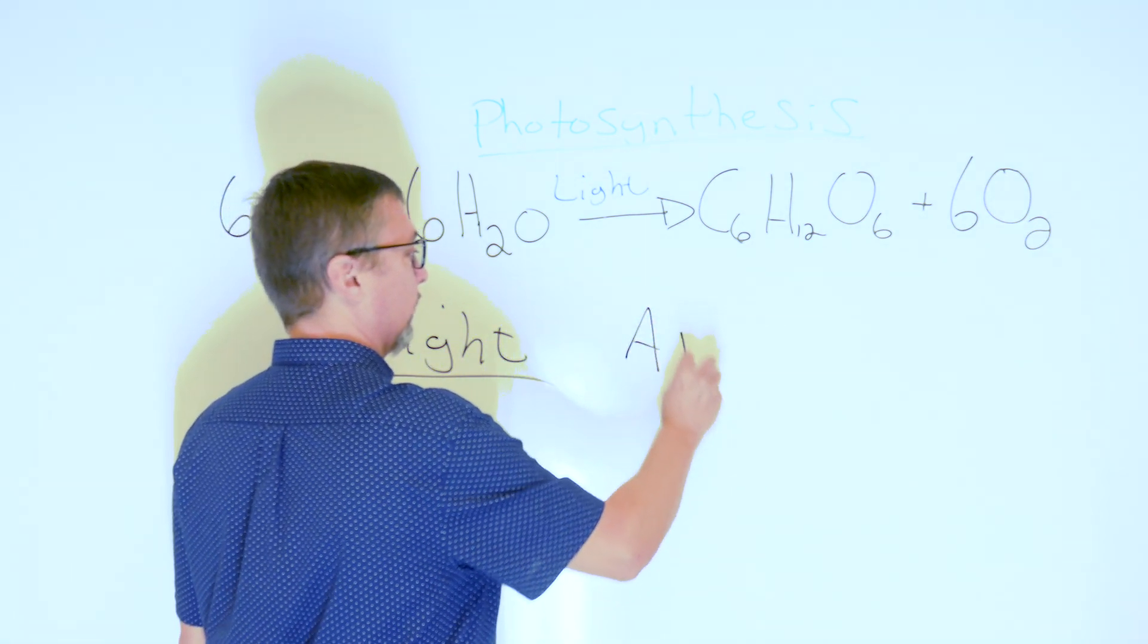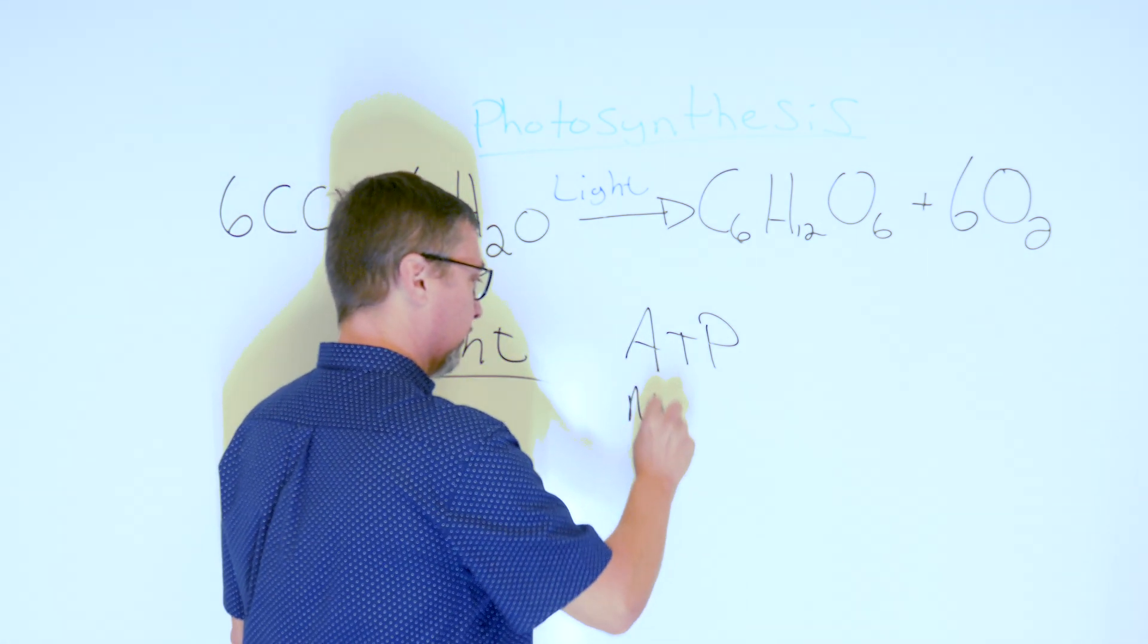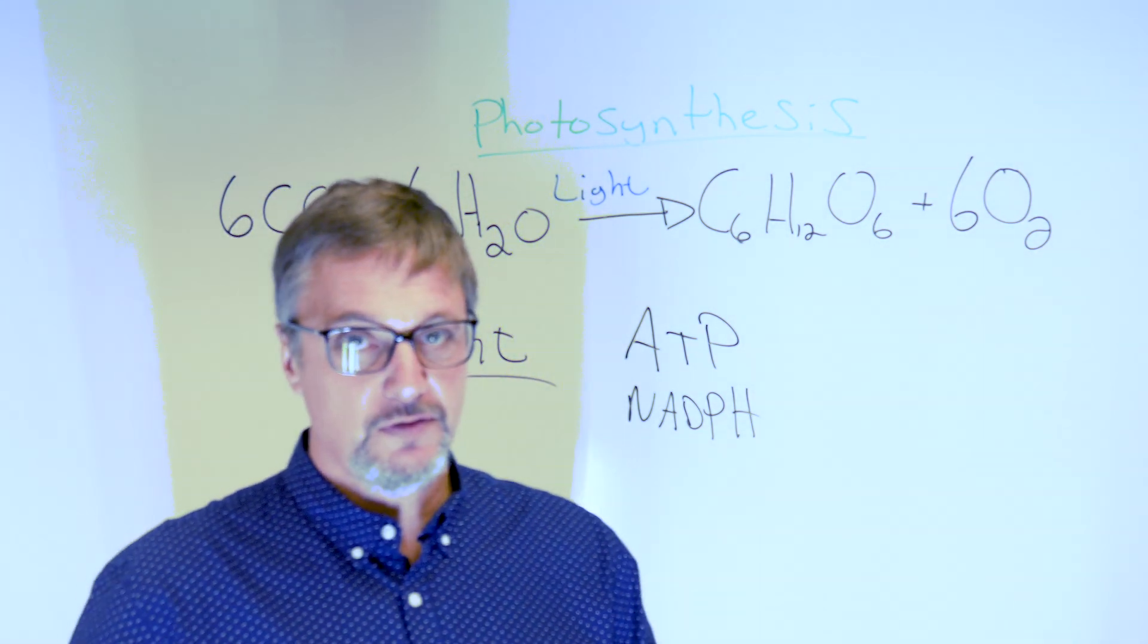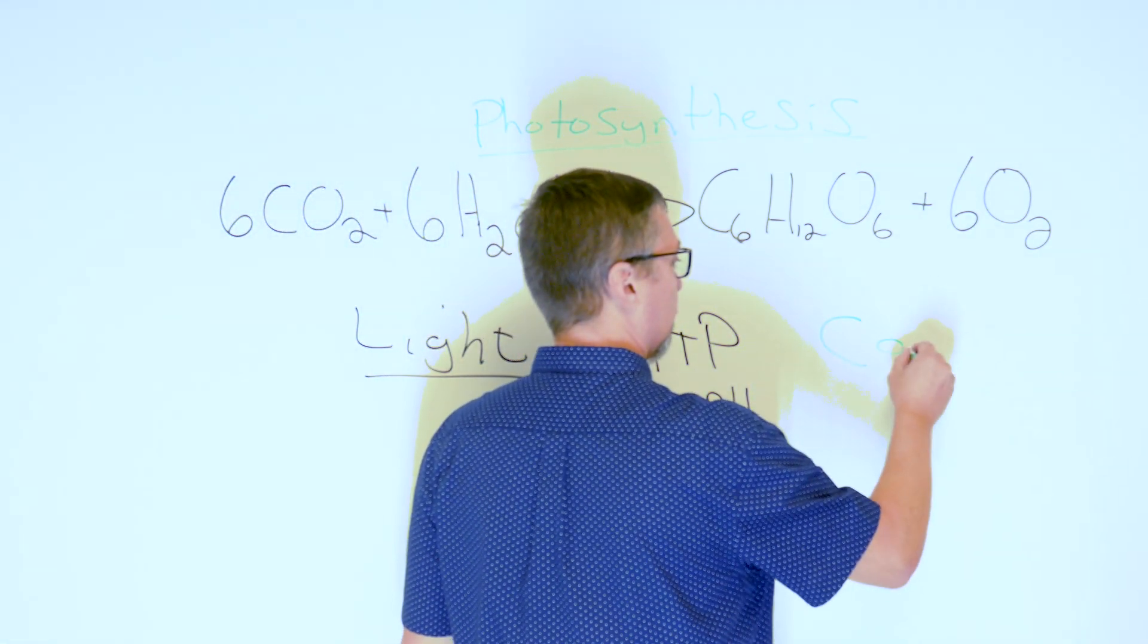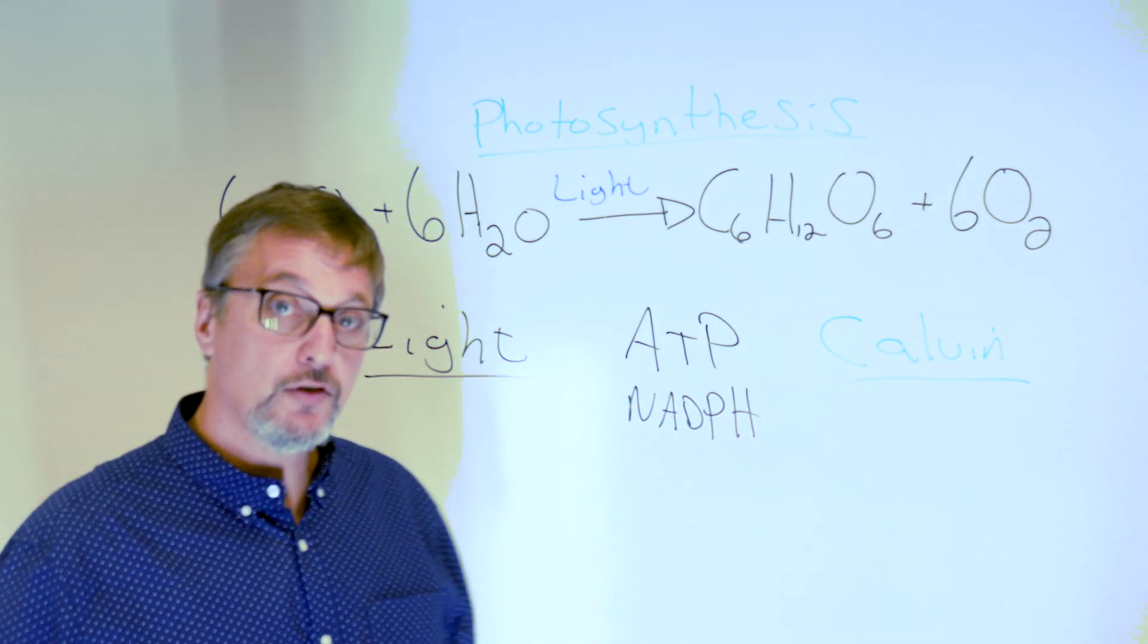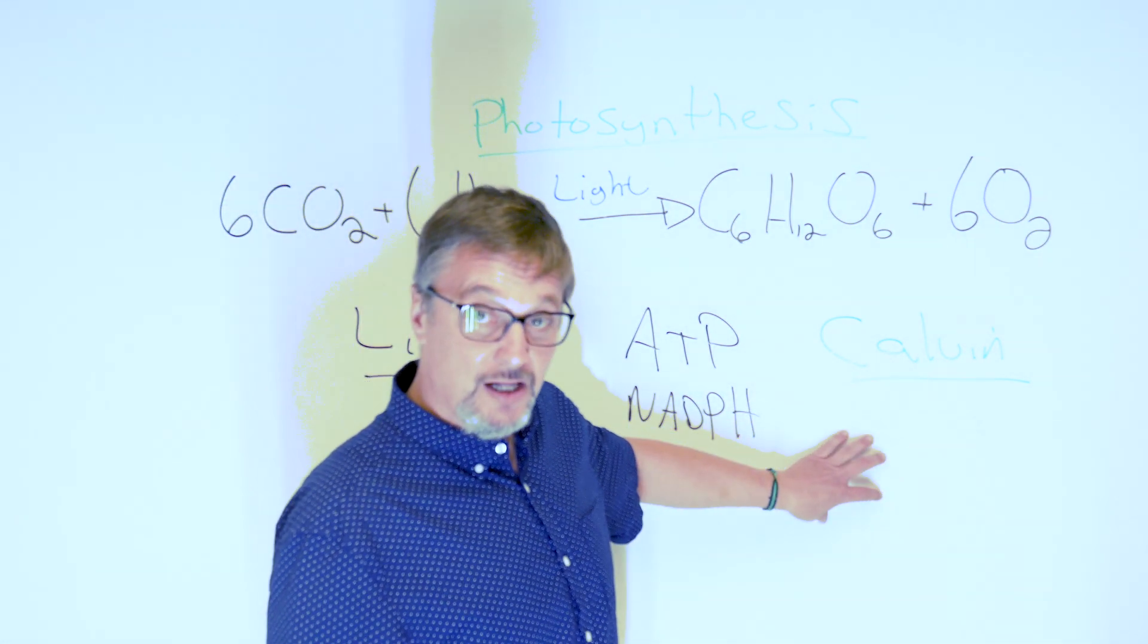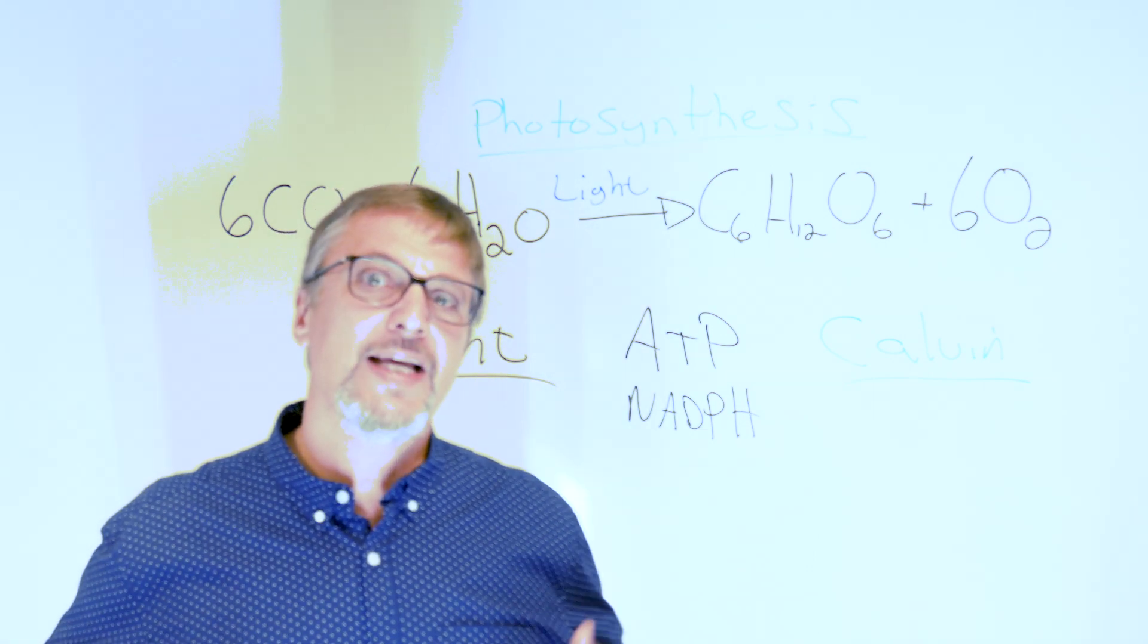The second step of photosynthesis is called the Calvin cycle. The Calvin cycle is what's going to use the carbon dioxide. So the idea of adding more carbon dioxide to your grow room is to maximize the Calvin cycle, because that makes the sugar or glucose, and this is the energy for plants.